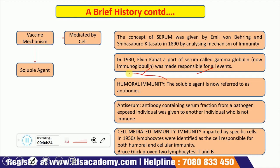The term humoral immunity was first used at that time. The soluble agent referred to as playing a key role in the vaccine mechanism was termed humoral immunity. It is called humoral because these antibodies are present in the body fluids called humors, hence the term humoral immunity was coined.